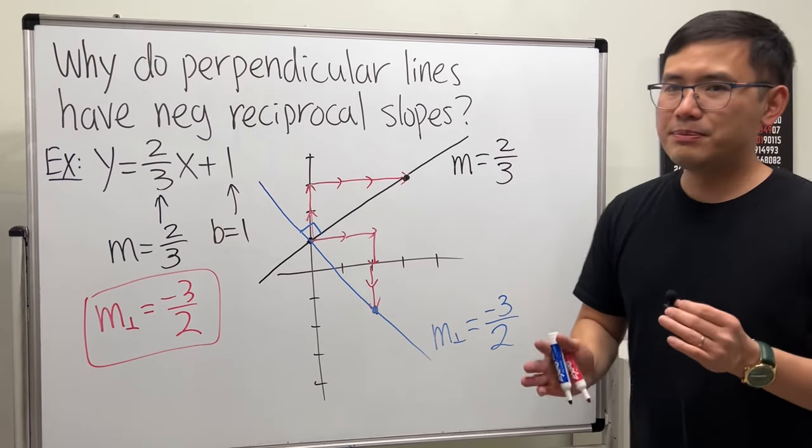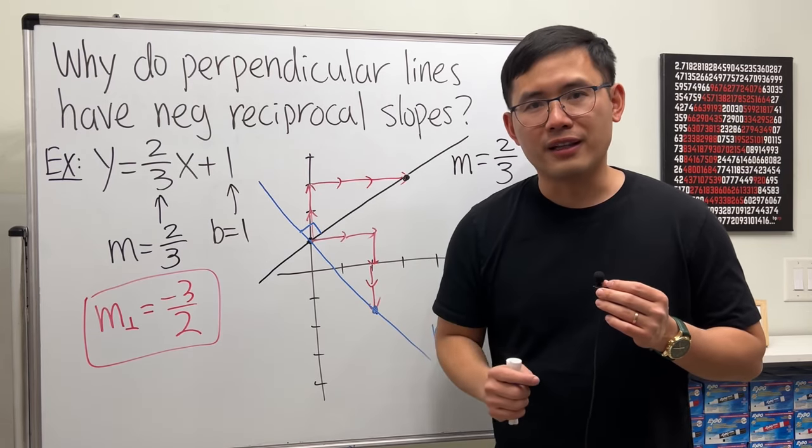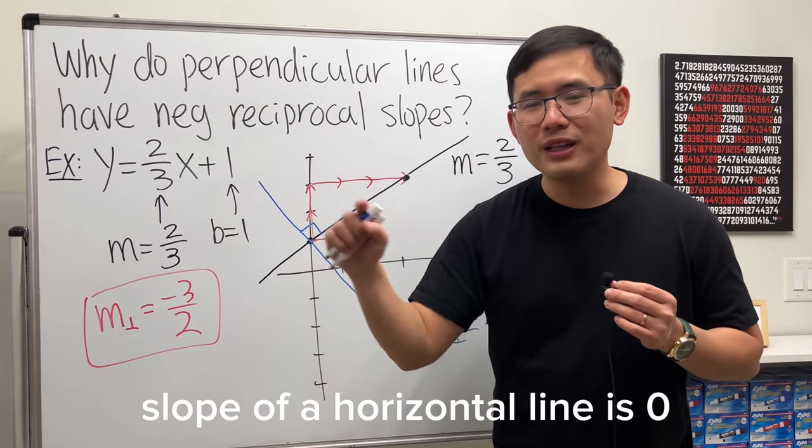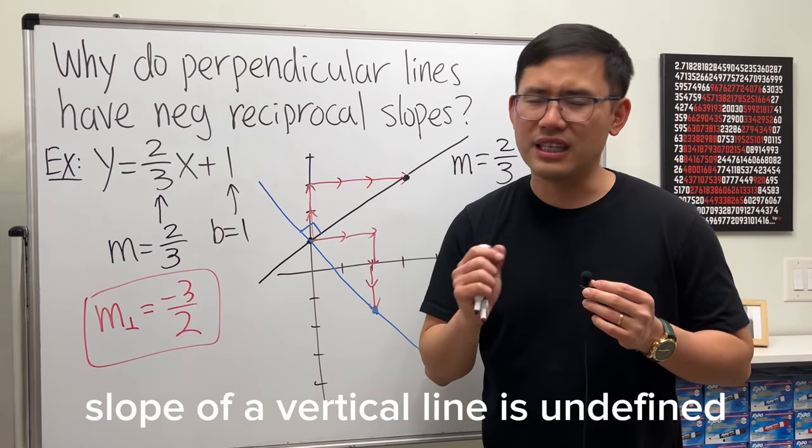Now, there is a special case. If we have a horizontal line and a perpendicular line, which is going to be vertical, the slope of a horizontal line is 0, and the slope of a vertical line is technically undefined.